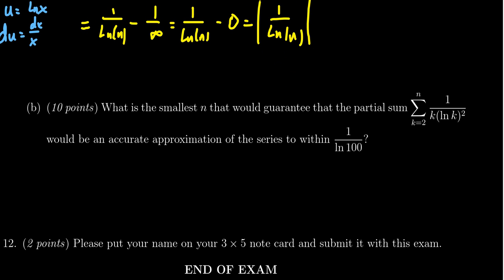So the error we want is the following. We take the error bound we found, which is 1 over the natural log of n. This needs to be less than or equal to 1 over the natural log of 100.